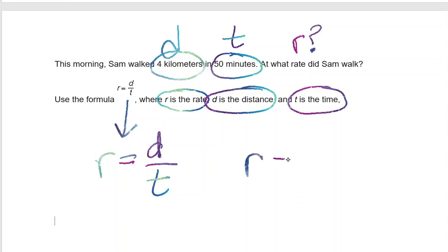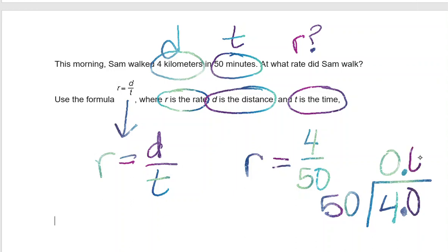So R equals 4 divided by 50. When we divide 4 by 50, the top number goes inside the house: 4 divided by 50. It's going to be a decimal value. 50 doesn't go into 4, add a 0. 50 doesn't go into 40, add another 0. 50 goes into 400 eight times. 50 times 8 is 400, and that is the rate at which he walks. So he walks 0.08 kilometers per minute, or eight hundredths of a kilometer per minute.